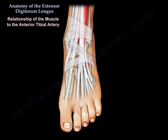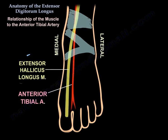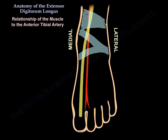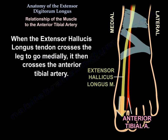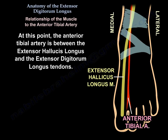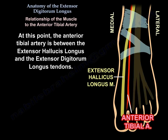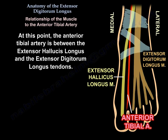When the extensor hallucis longus tendon crosses the leg to go medially, it crosses the anterior tibial artery. At that point, the anterior tibial artery is positioned between the extensor hallucis longus medially and the extensor digitorum longus laterally.